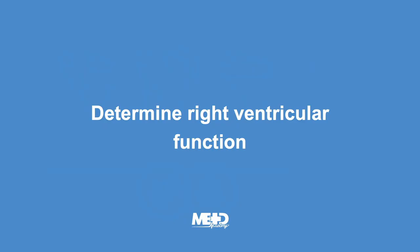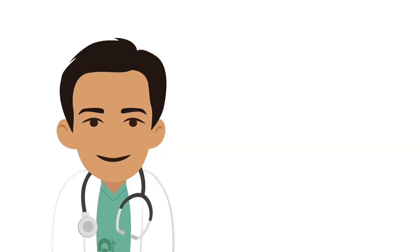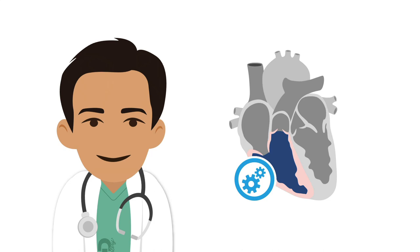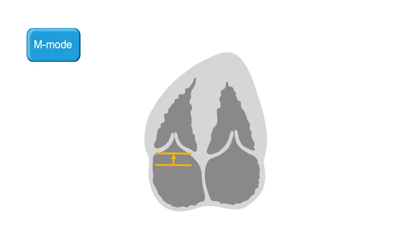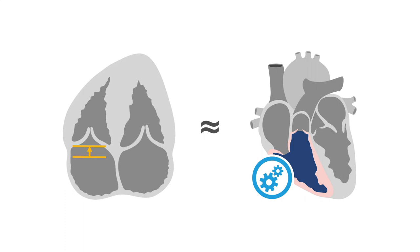With 3D echo, you can easily determine right ventricular function. First, let's review how 2D echo is used to determine right ventricular function. Using M mode, you can assess how far the tricuspid annulus moves towards the apex during systole, an indication of right ventricular systolic function.